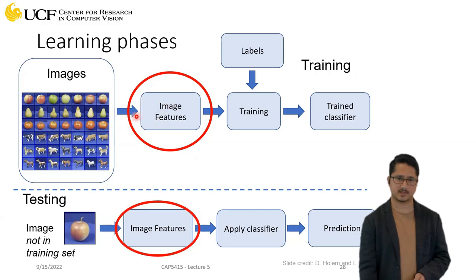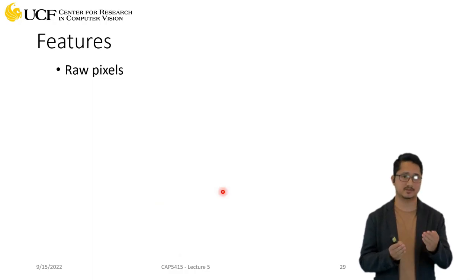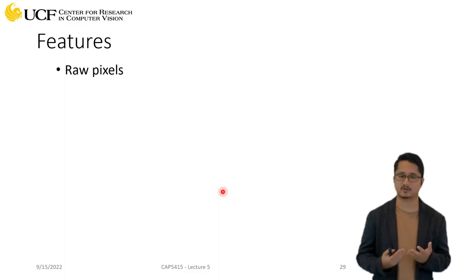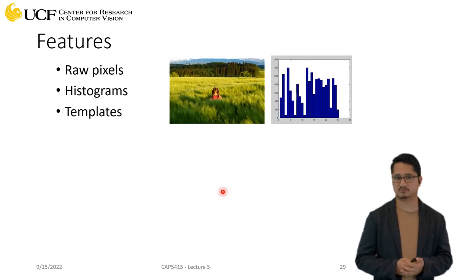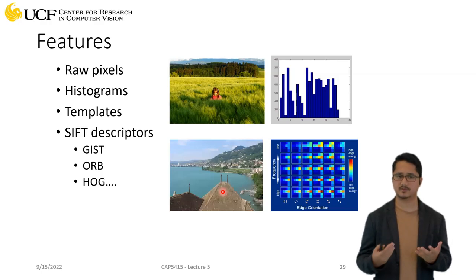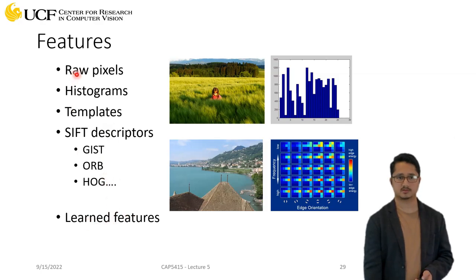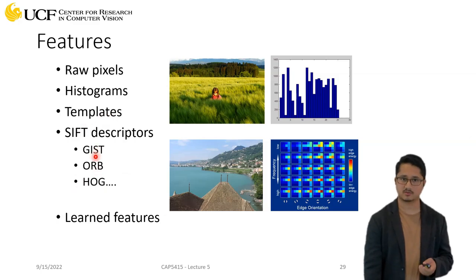Possible image features include raw pixels, histograms, templates, and various local features like SIFT descriptors. You can also learn features using raw pixel values. We'll cover two aspects: first using local features to extract meaningful representations, and second learning these features through neural networks.